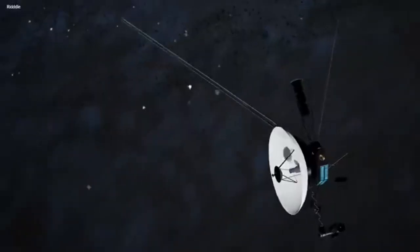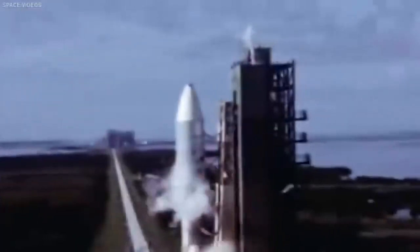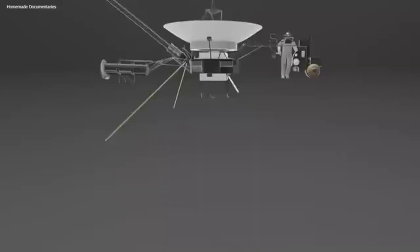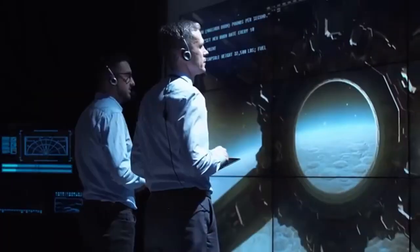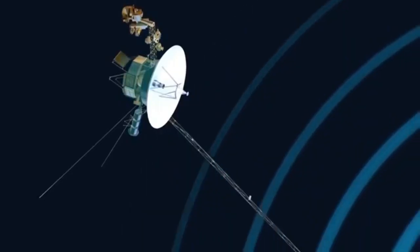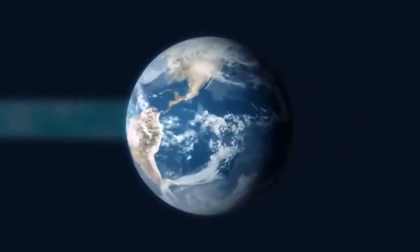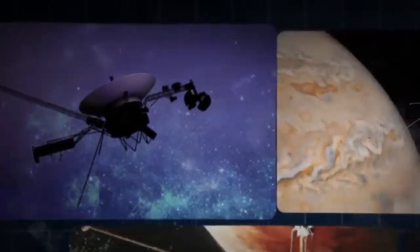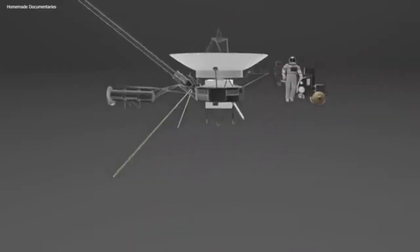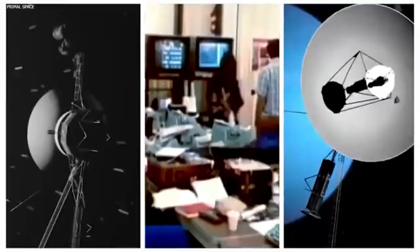After careful investigation, the anomaly was traced back to the Altitude and Articulation Control Subsystem, AACS. The AACS is responsible for orienting the spacecraft and controlling its movements. It was discovered that the AACS had been sending telemetry data through an onboard computer that had ceased functioning years ago. This outdated computer had somehow become entangled in the telemetry transmission process, leading to corrupted information being sent back to Earth.